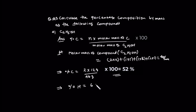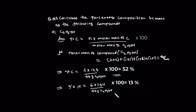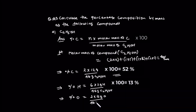So 6 times 1 gram of hydrogen divided by 46 grams of C2H5OH. And for oxygen: 1 times 16 grams of oxygen divided by 46 grams of C2H5OH.